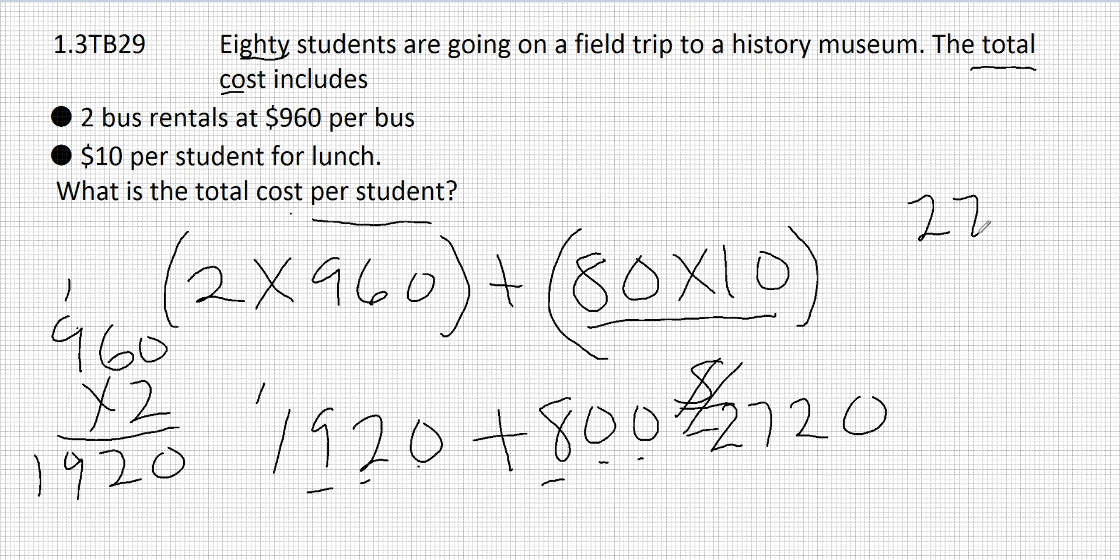Now we take the $2,720 and divide by 80 students to find how much it costs per student. I know that 8 times 3 is 24. So I think 3 times 80 is a really good chance of getting that one right.